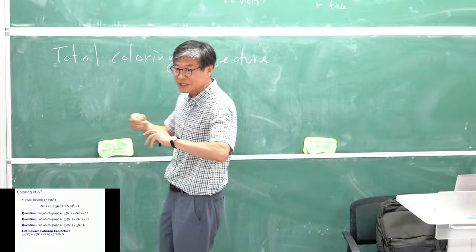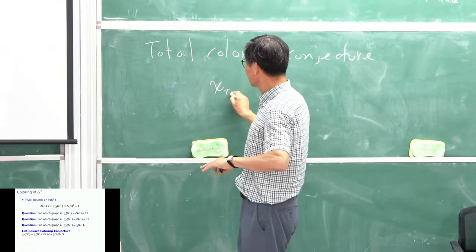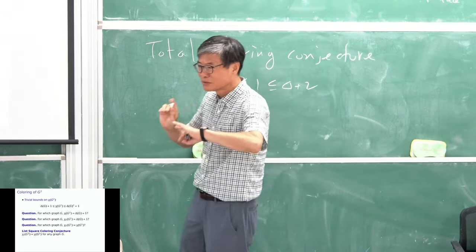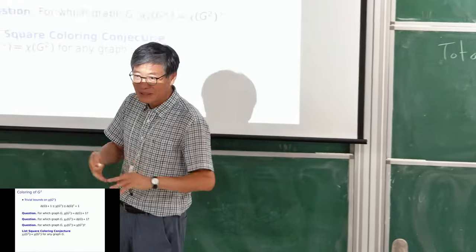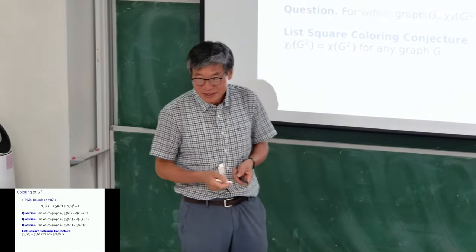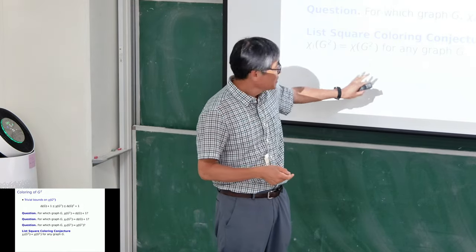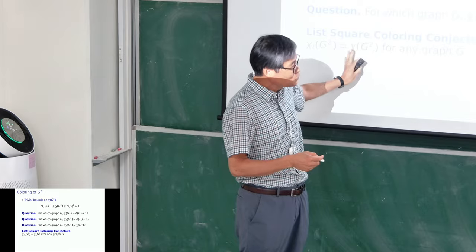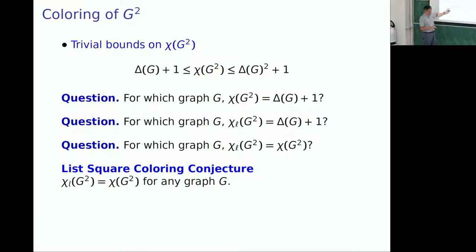Total coloring conjecture is delta plus two. So, you're coloring vertices and edges. Coloring vertices and edges. The total coloring conjecture is the famous conjecture. So, if this conjecture is true, then it's true. Actually, the partial case of this conjecture is true, then that conjecture is true. So, that's why this conjecture is important.